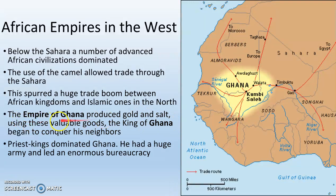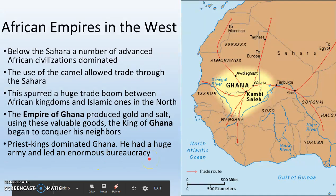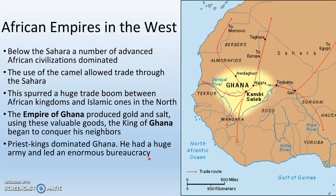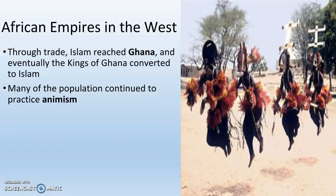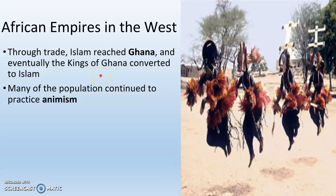Probably the most important kingdom in medieval African history is the Empire of Ghana. They make all of their wealth off of gold and salt, and they actually trade this gold and salt north with the Islamic kingdoms for advanced weaponry, like guns. Using all of this really cool stuff he's getting from the Muslims to the north, the king of Ghana begins to conquer all of his neighbors. Ghana is a theocracy with priest kings, so it's also dynastic. The king of Ghana has a huge army and a very complex and sophisticated government. Through trade, Islam is actually going to reach Ghana, and eventually the kings of Ghana, as well as a lot of the people that live in Ghana, are going to convert to Islam.